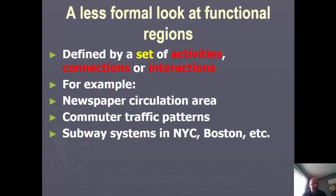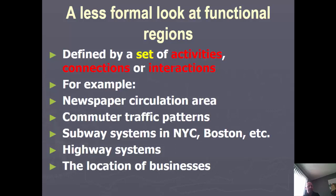Highway systems transport us from one place to another and often merge near major cities in a cobweb-like design. When businesses decide where to establish new locations, they look at the functional regions of their existing stores and ask: are people having to travel too far? Are people outside all the other functional regions? If so, they might want to build a new business in that spot to serve folks who are currently outside the reach of other functional regions.